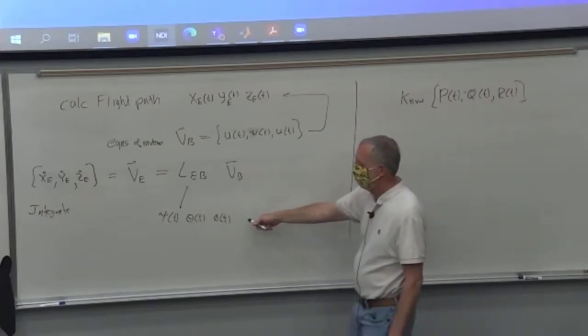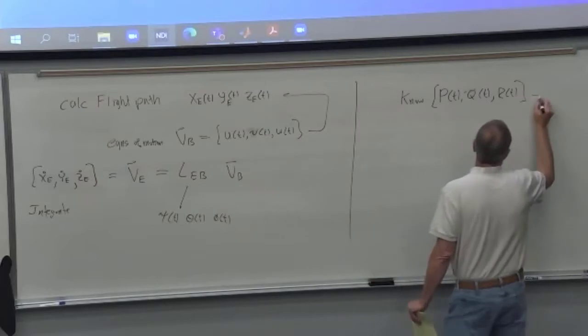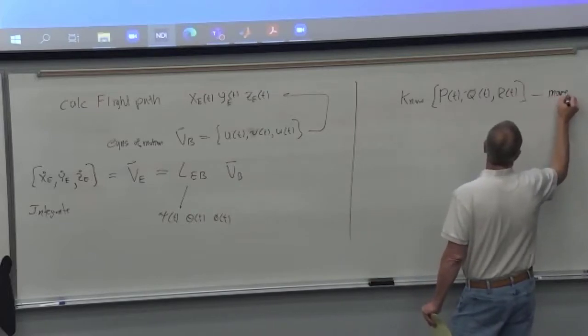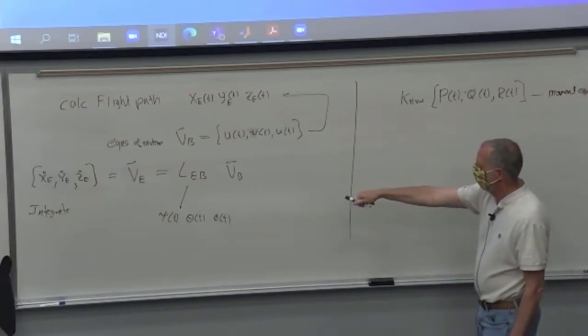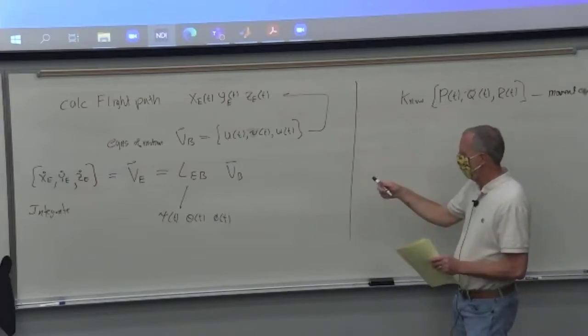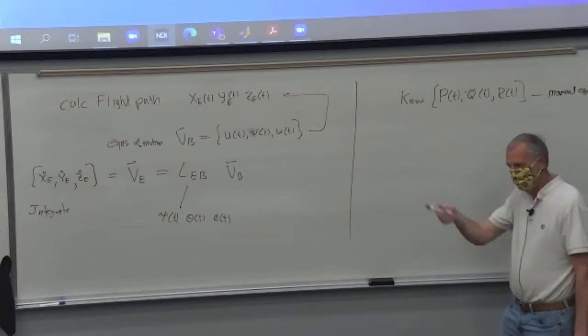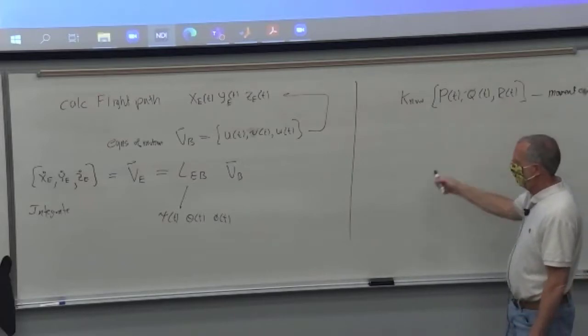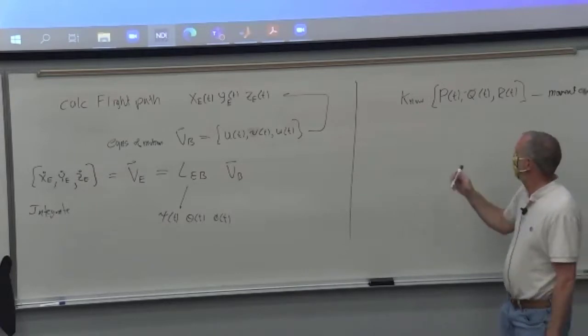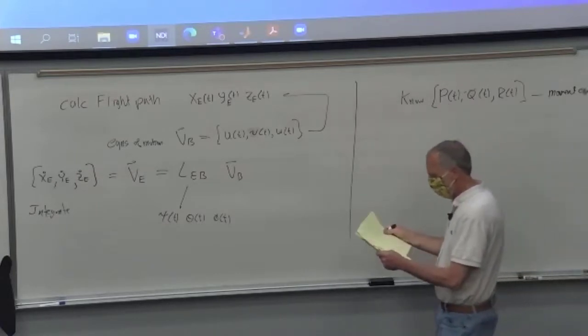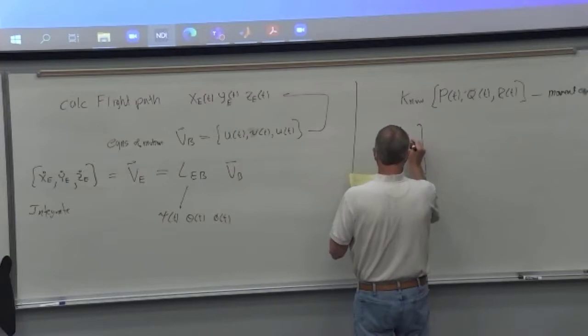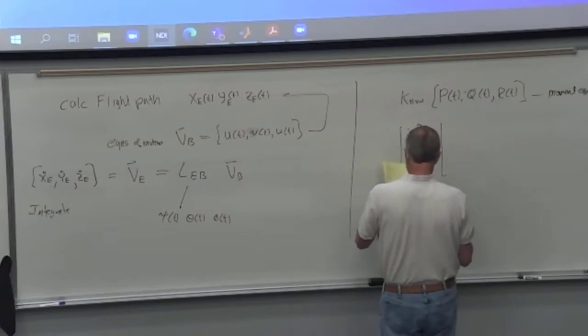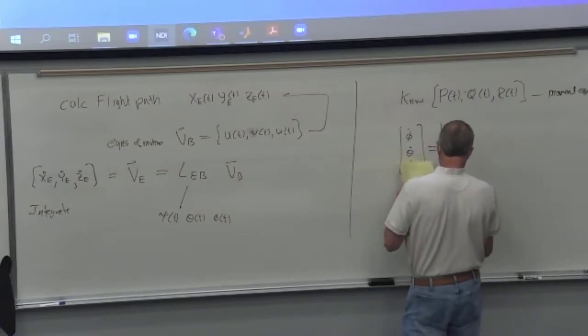But how do we get psi, theta, and phi as a function of time? These come from the moment equations. We need a transformation that tells us psi, theta, and phi in terms of p, q, and r, because psi dot obviously is a yaw rate, it's nose going right, so it's got to be related to r somehow. Phi is a bank angle, so phi dot has got to be somehow related to a roll rate. So there's a direct connection there.